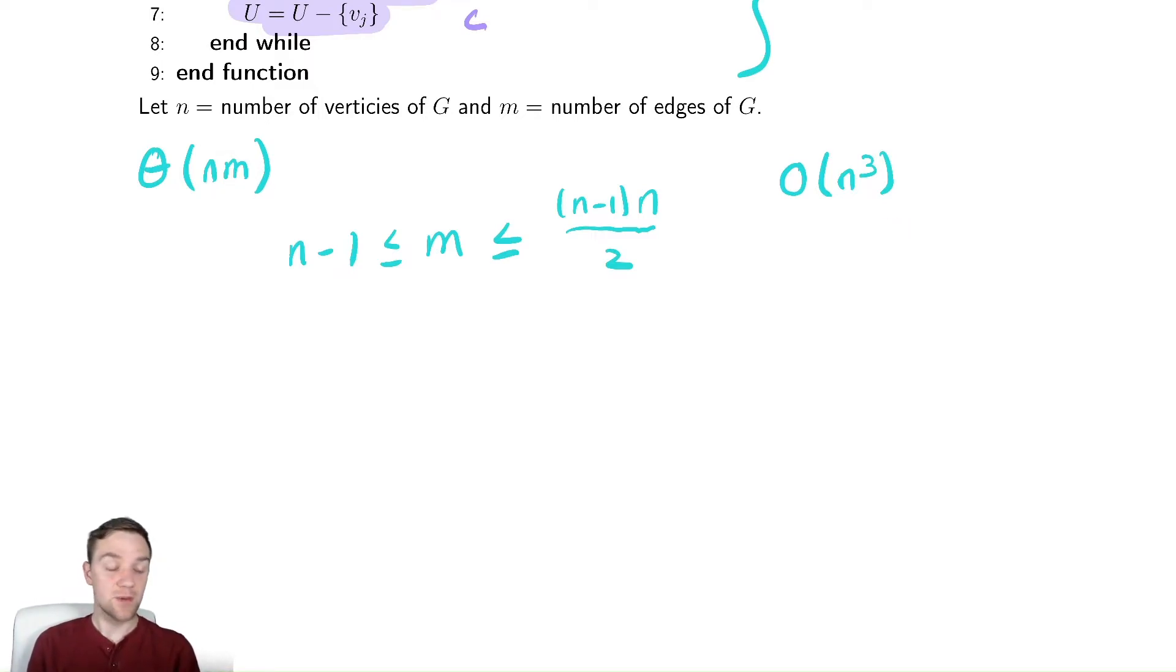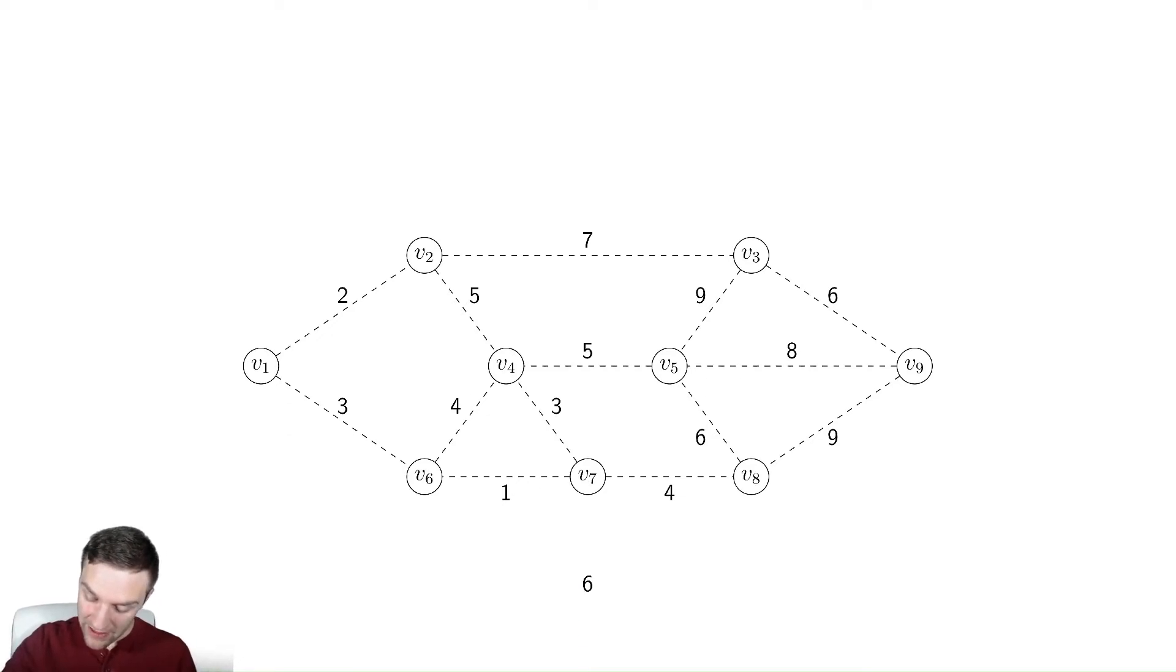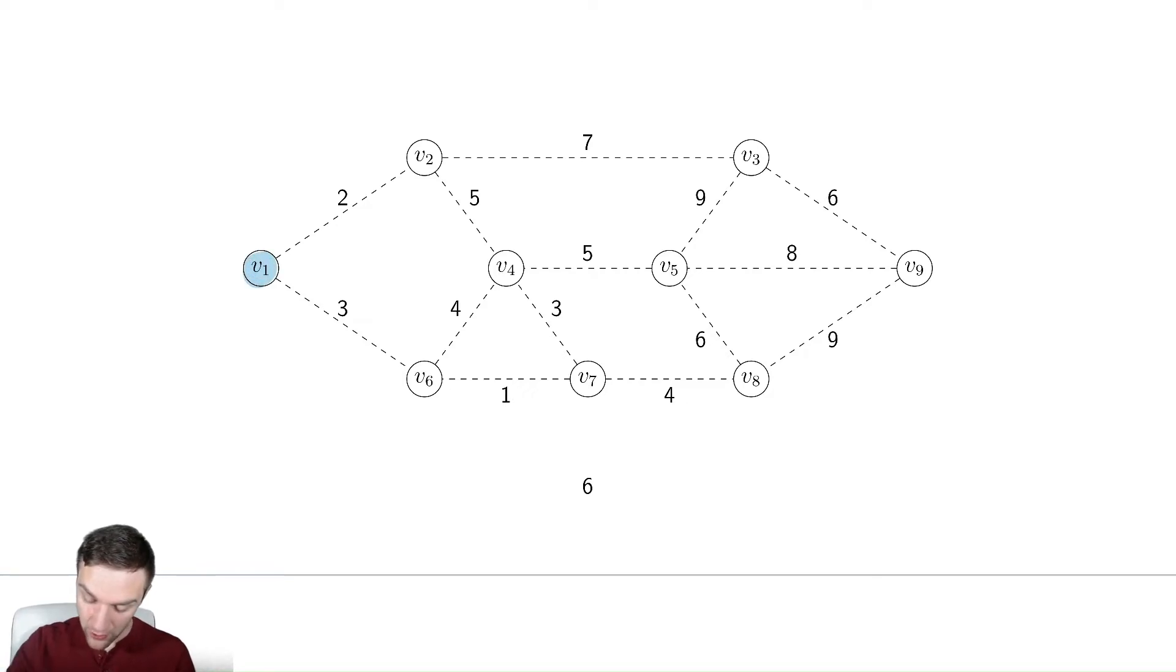That being said, this is relatively straightforward to run for ourselves. So let us try and do this. Here we have an example. Let's try and run the algorithm. I'll use the same colors I did before for this analysis. We will highlight nodes. Let's start with v1. That's what our code said to do.